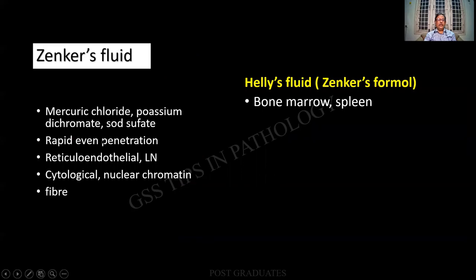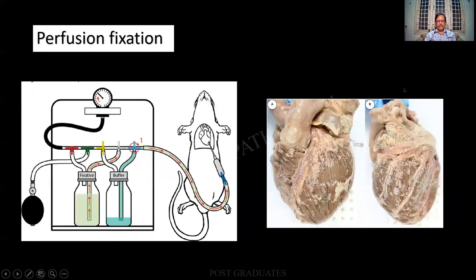Zenker's fluid — mercury chloride, rapid penetration, reticuloendothelial system under lymph node. Helly's fluid is a modified Zenker's. This is more relevant in connection with autopsy rather than routine processing. In anatomy it will be important. There is a technique called perfusion — we have spoken about heat fixation, vapor fixation, chemical fixation, and then there is something called perfusion fixation.